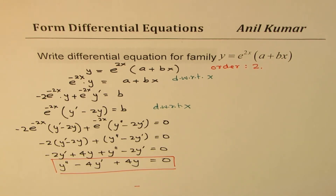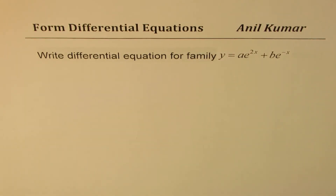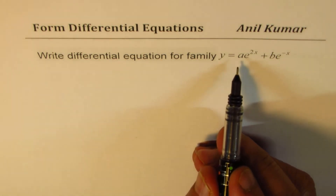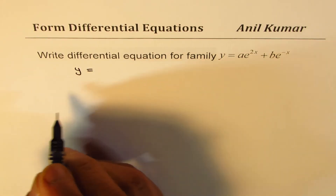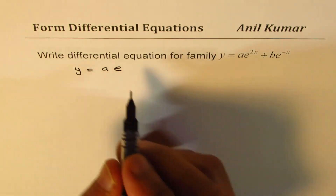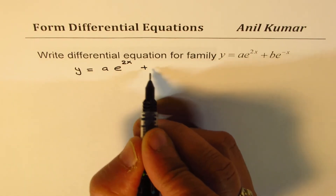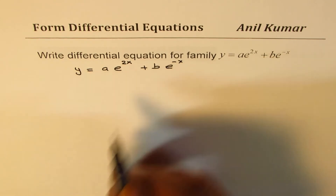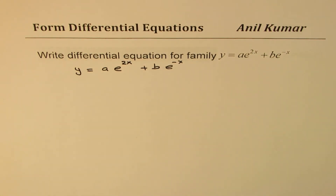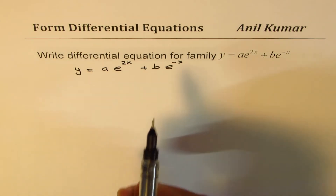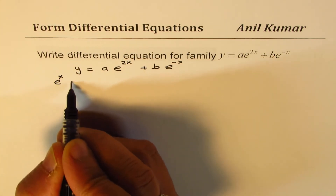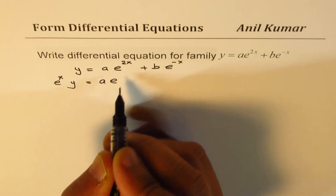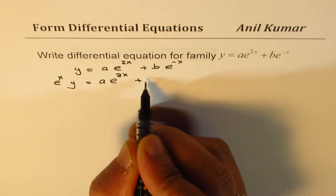The next example: write the differential equation for the family y = ae^(2x) + be^(-x). This is very similar to the first question, so please pause the video and answer before checking my solution. The strategy is to multiply both sides by e^x, giving e^x·y = ae^(3x) + b.